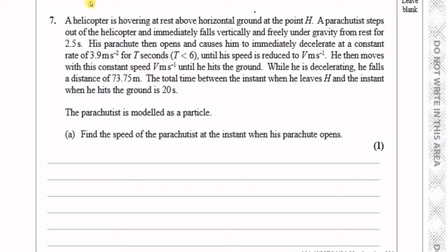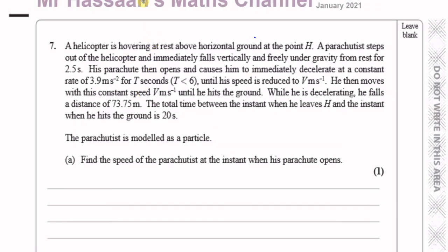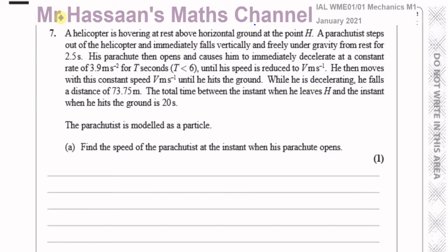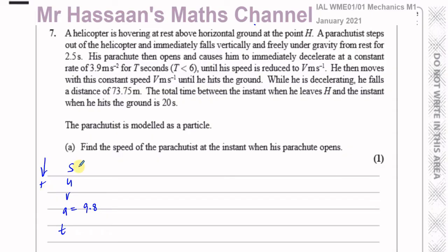The parachutist is jumping from the helicopter going vertically down, so I'm going to take down as positive. He's under a constant acceleration of gravity for the first 2.5 seconds, so it's constant acceleration and we can use the SUVAT equations. The gravitational acceleration is 9.8 positive, because he's going down.